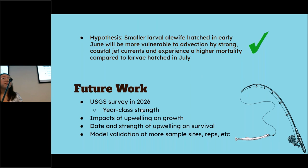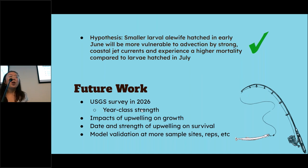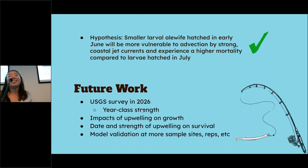There's a question from online: she's curious what the zooplankton distribution looked like — did it follow what you saw with the larval alewife? We didn't have time to go over the zooplankton densities, but we do have that data and are currently processing it. It'll be interesting to see if there are any correlations with high zooplankton mass and high alewife density.